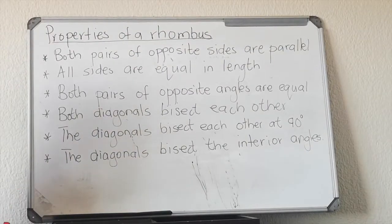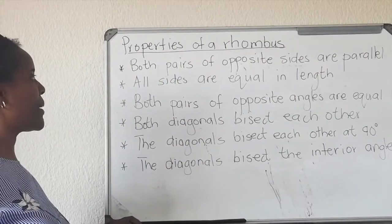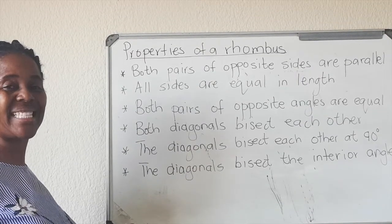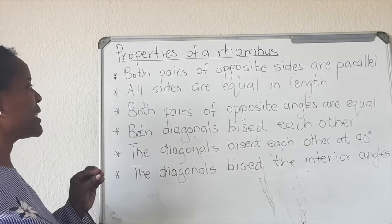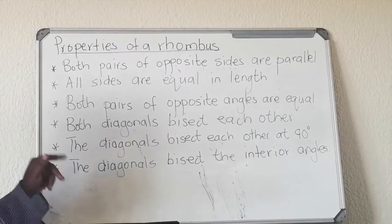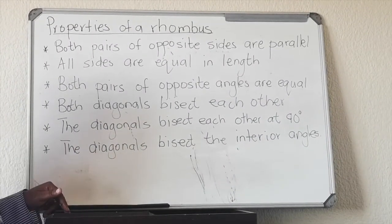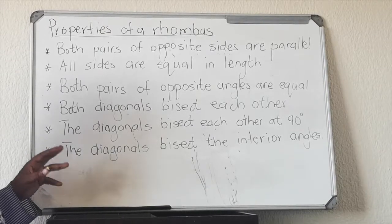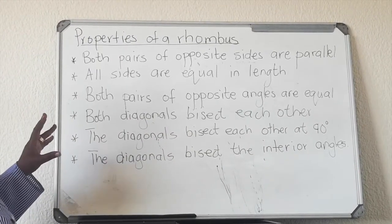Welcome everyone. Today we're going to look at the properties of a rhombus. It is very important to remember that a rhombus is a parallelogram. When we were taught parallelogram, we were taught the properties of a parallelogram. A rhombus is a parallelogram, a square is a parallelogram, a rectangle is a parallelogram. It is very important for you to memorize the properties of the parallelogram.